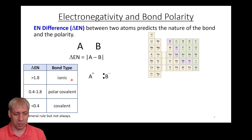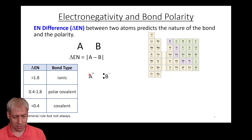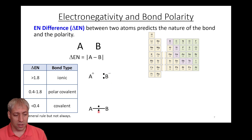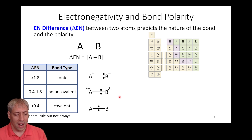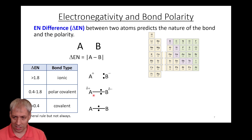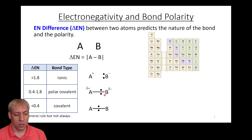If the electronegativity difference is sufficiently large, B being very electronegative and A being less electronegative, B is going to steal that electron, become negatively charged, and A will be positively charged — that's an ionic bond. On the other extreme, a pure covalent bond has no big electronegativity difference and largely shares electrons between the two. Somewhere in between is polar covalent, where they're still sharing electrons but giving more electron density to one atom than the other.